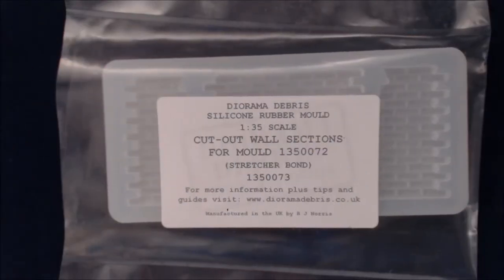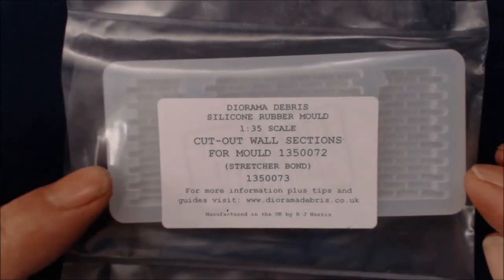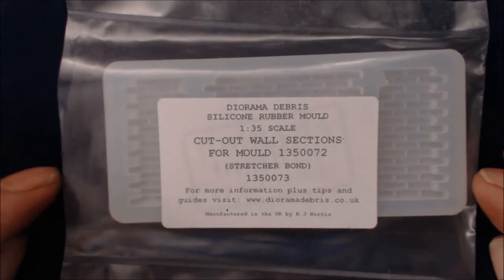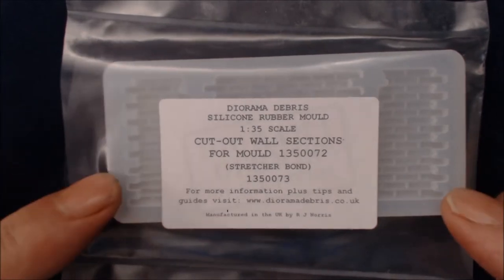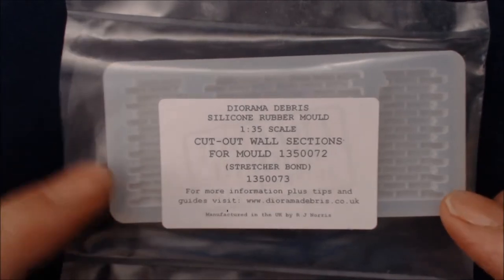Hi and welcome, and we have an offering from Diorama Debris and I'll run through it as I normally do. This is sold by Diorama Debris. It's a silicone rubber mold. This particular one is in 1:35 scale.